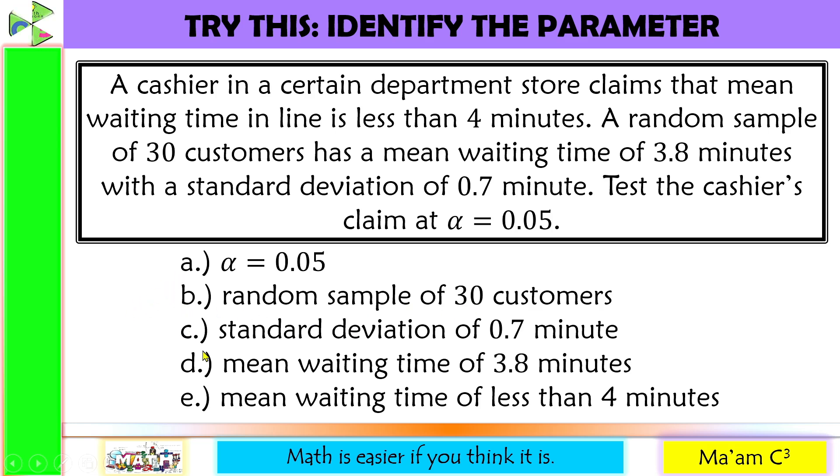Letter C, standard deviation of 0.7 minute. Let's find out where does this came from. 0.7 minute. This is the standard deviation of the 30 customers from the random sample. So 0.7 minute is the standard deviation of the sample. Therefore, this is also not a parameter.